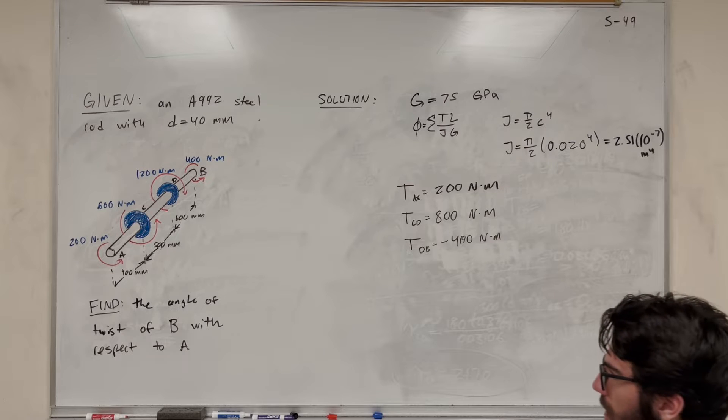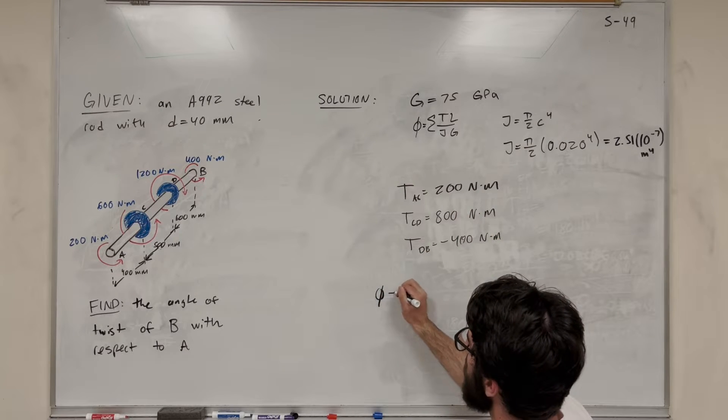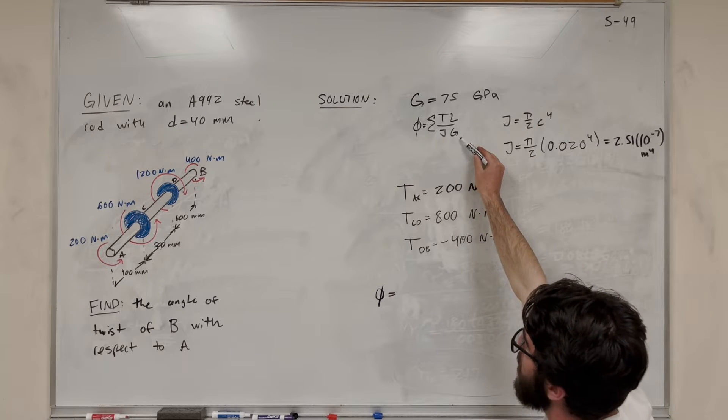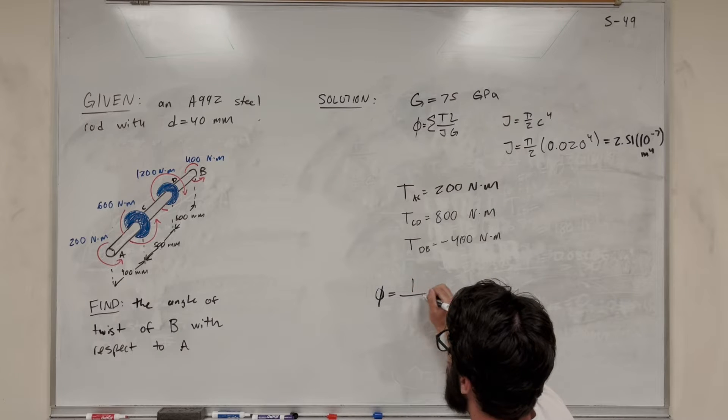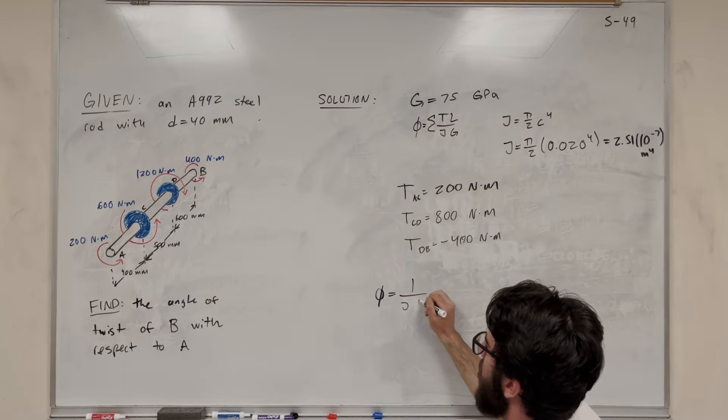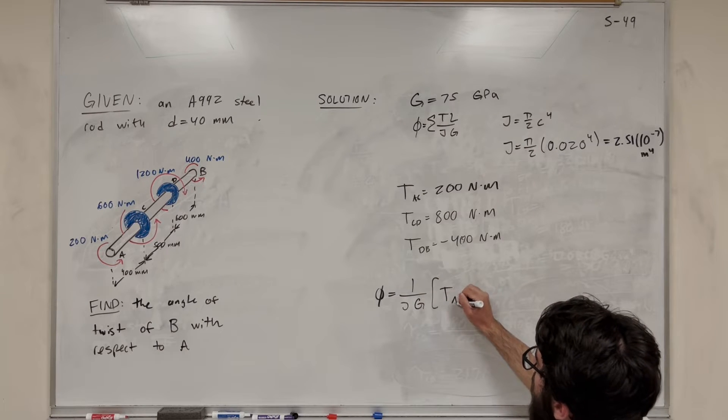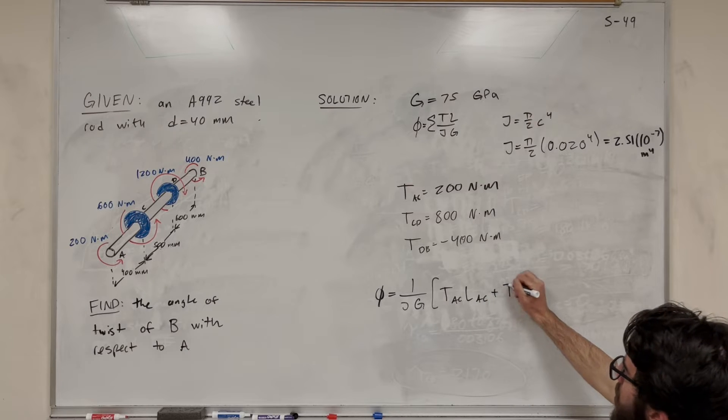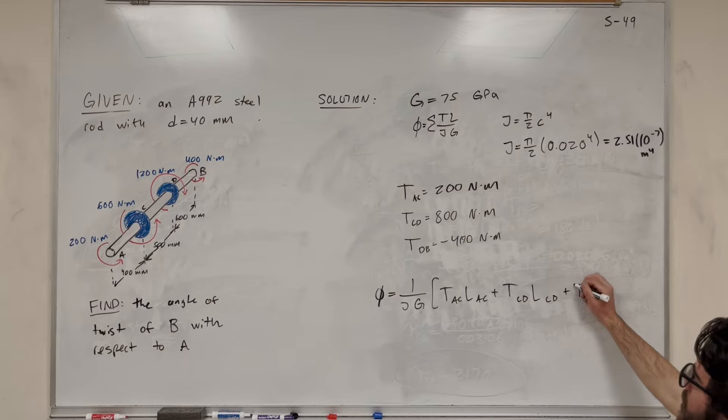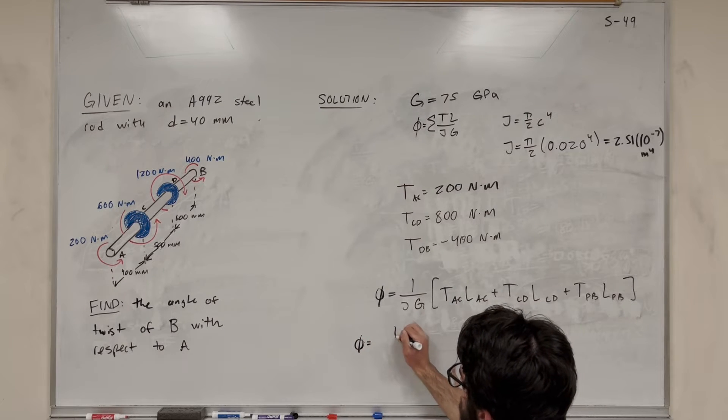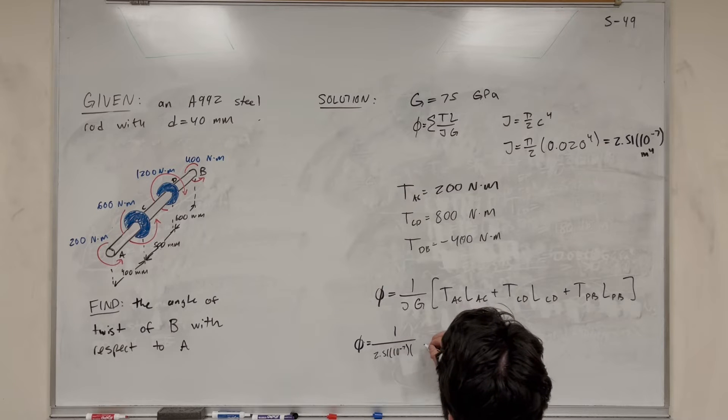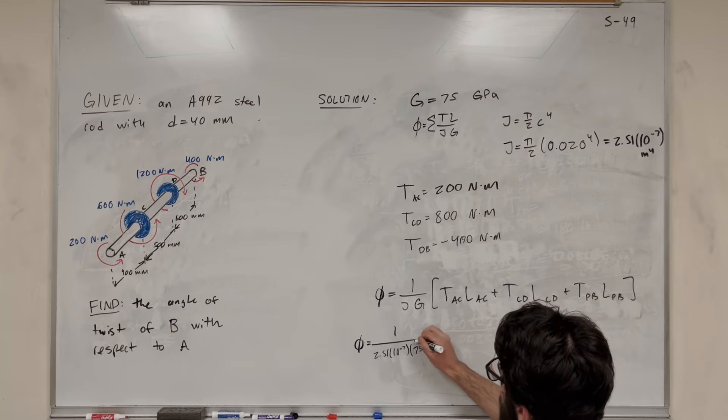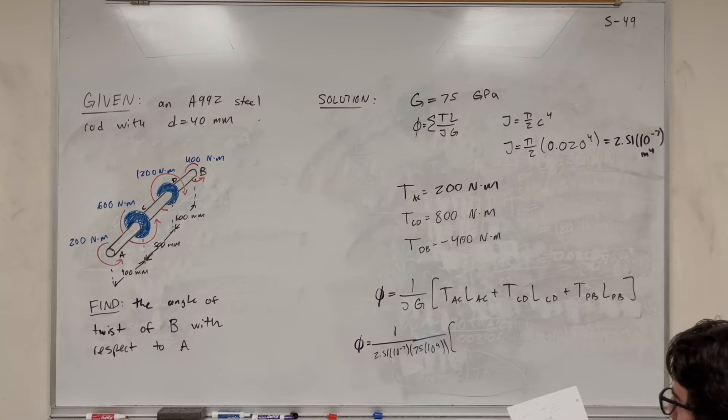Okay. So let's go ahead and solve our angle of twist. So, right, we're going to sum them up. So what's it going to be? Well, let's look. So first of all, J and G, they're going to be the same for the entire rod, right? J is what we calculated here. The rod doesn't change diameters at any point. So we can factor out that, a 1 over J. And then the G is the modulus of rigidity. That's the same for the entire rod because it's the same material. So then all we have to do is torque AC times length of AC plus torque CD times length of CD plus torque DB times length of DB. So let's add that up, or let's just do that. So first of all, J, 2.51 times 10 to the negative 7th times G, which is 75 times 10 to the 9th because that's what the giga means. Okay, so we're here.